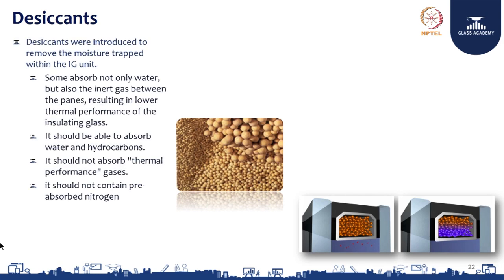The desiccant was introduced to remove moisture trapped inside the IG unit. However, some desiccants absorb not only water but also the inert gases between the panes. That would result in lower thermal performance. Whatever desiccant we select, it should not absorb any inert gases — the thermal performance gases. At the time of purchase, we should keep in mind that the desiccant should not absorb the inert gases.